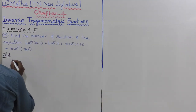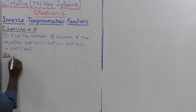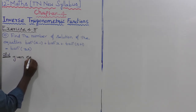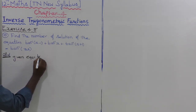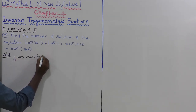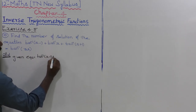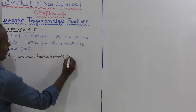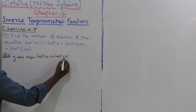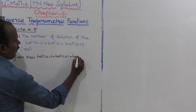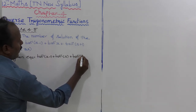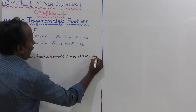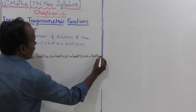The given equation is: tan inverse of (x minus 1) plus tan inverse of x plus tan inverse of (x plus 1) is equal to tan inverse of 3x.